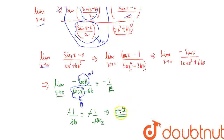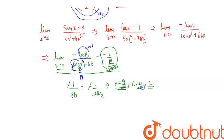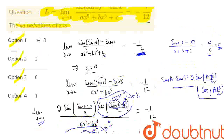So we have b = 2 and c = 0. Now we need to determine the value of a. From the expression, we can clearly see that with b = 2 and c = 0, the limit exists and equals minus 1 by 12 for any real value of a. Therefore, a belongs to the set of real numbers. Checking the options, option 1 is the correct answer. This is our solution.